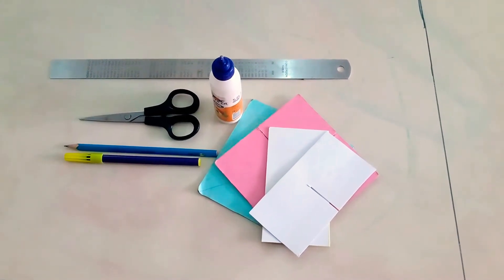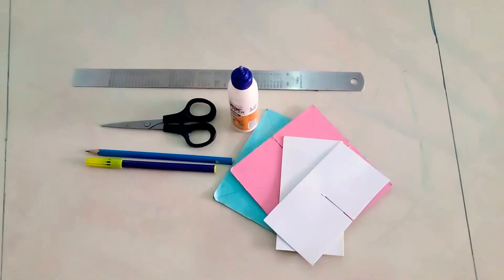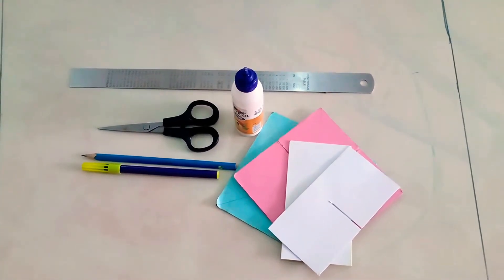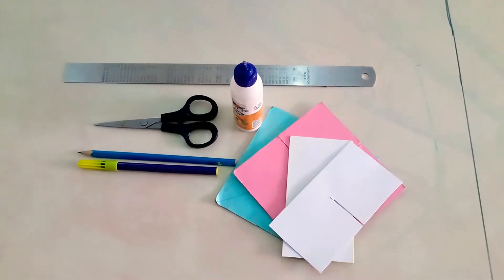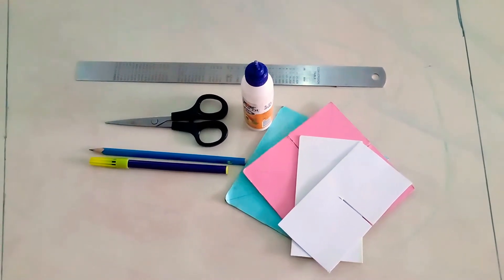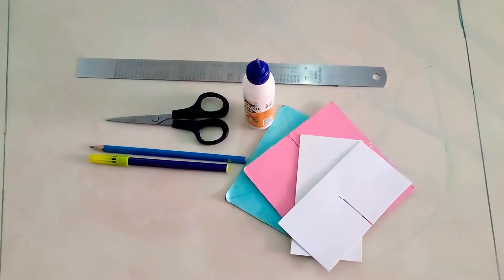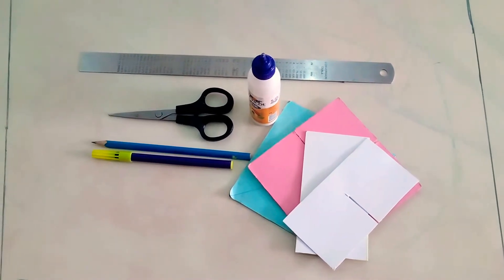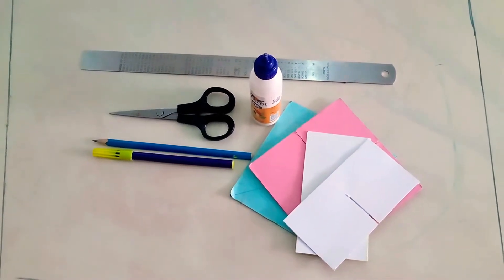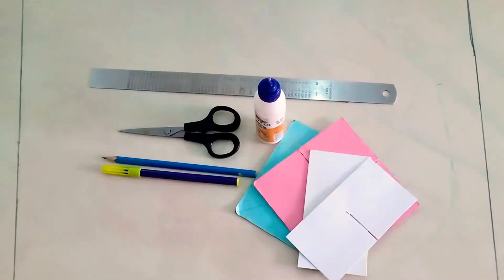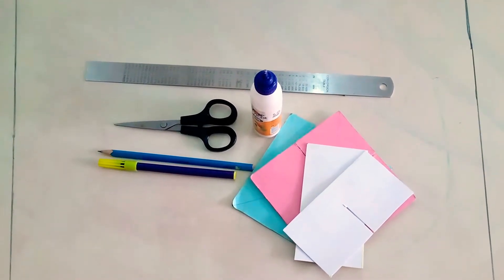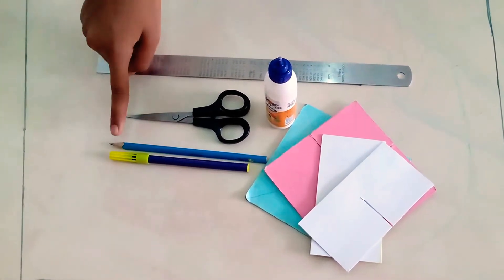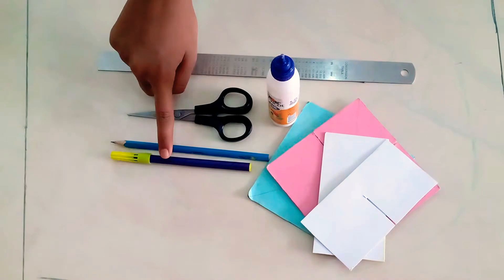Dear friends, today we will see how to make a maths model of XYZ plane axis in geometry. This will help us to understand the X, Y, and Z axis better. The required things are a scale, scissors, pencil, glue, colored paper, and cardboard.